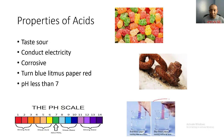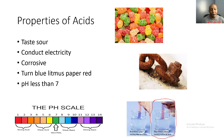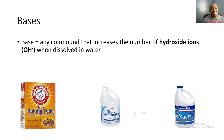Acids turn blue litmus paper red. When we dip blue litmus paper into an acidic solution, it turns red because of the high concentration of hydrogen or hydronium ions. Acids also have a pH less than seven. The further we get from seven, the stronger the acid becomes — that's where hydrochloric acid and battery acid sit. Closer to seven, the weaker the acid, such as acid rain or apple juice.